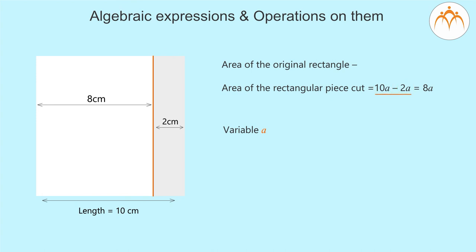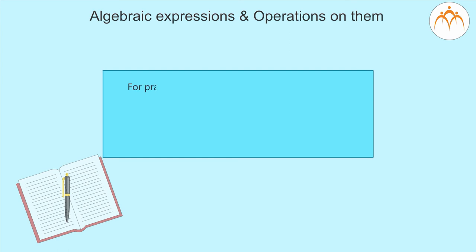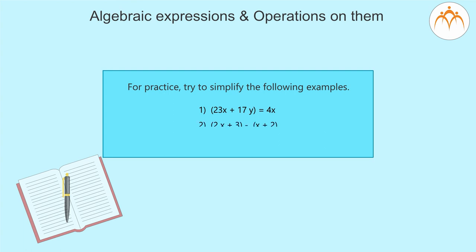For practice, try to simplify the following examples: 1. 23X + 17Y − 4X. 2. 2X + 3 − X + 2. 3. 9X − 2X + 5Y.